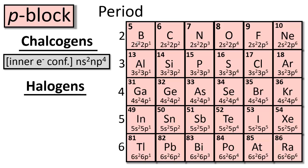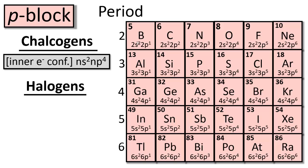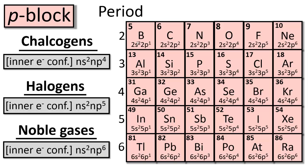For the halogens — that's fluorine, chlorine, and so on — the electron configuration is going to be the inner electron configuration plus ns² np⁵. And finally, the electron configuration of a noble gas in the p-block is the inner electron configuration plus ns² np⁶. Remember, n is simply the period number of the periodic table.